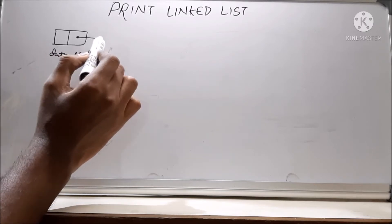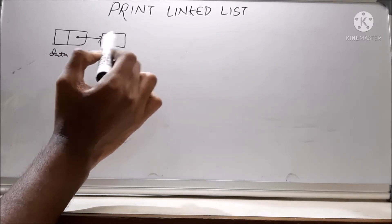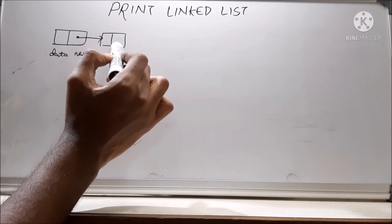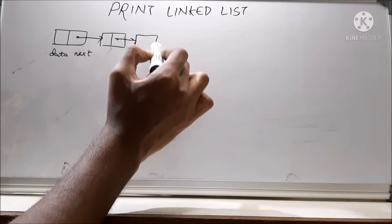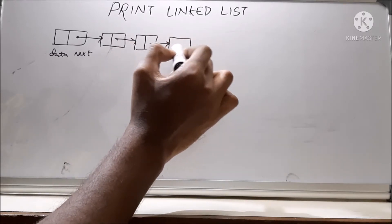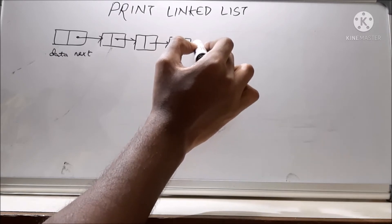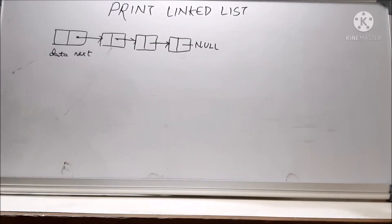So a linked list will look something like this. This will have the address of the next node. So this is another node. Now this will have data and then this will have the address of the next node. And the last node will have null. So this is a linked list.